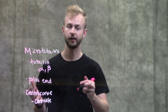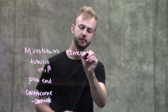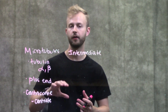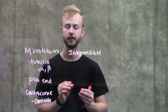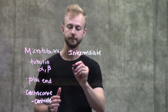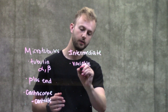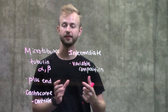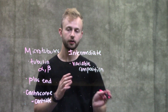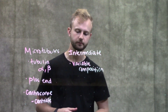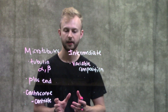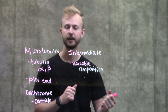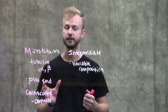Moving on to the second largest filament: intermediate filaments. Intermediate filaments are a little harder to understand because, unlike microtubules and microfilaments, they aren't made up of a particular protein — they have a variable composition. They can be made up of many different things depending on where they are in the cell and what kind of cell it is. Intermediate filaments are also not as dynamic as microtubules and microfilaments, so you won't see as much rapid polymerization and depolymerization.